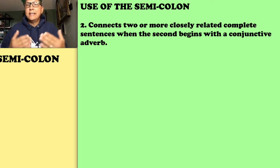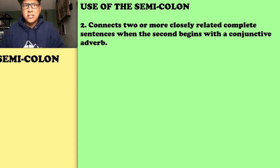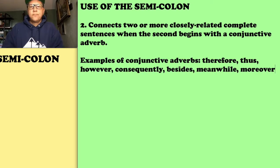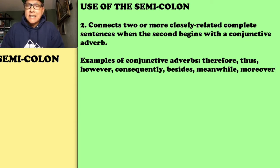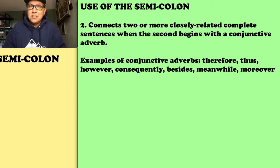Rule number two: a semicolon connects two or more closely related complete sentences when the second begins with a conjunctive adverb. That's a grammar term that might sound unfamiliar, but once you see examples you'll recognize them. Words like therefore, thus, however, consequently, besides, meanwhile, and moreover are all conjunctive adverbs. There are many more — just Google examples of conjunctive adverbs.